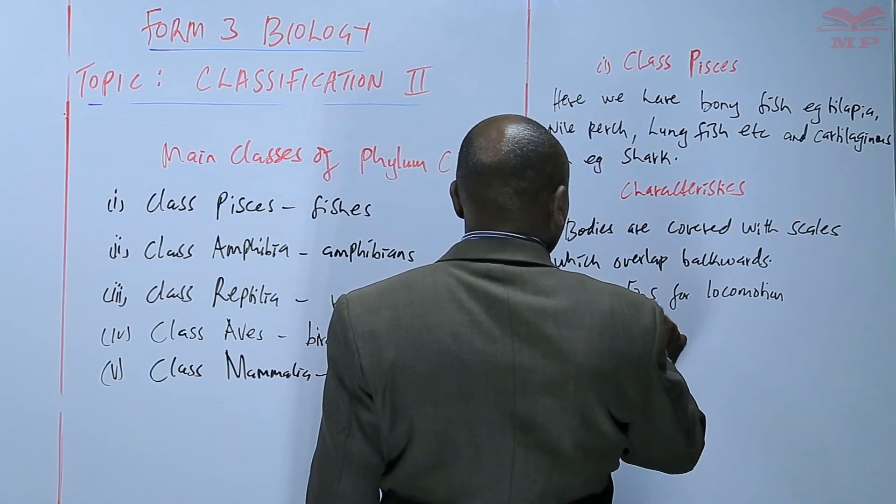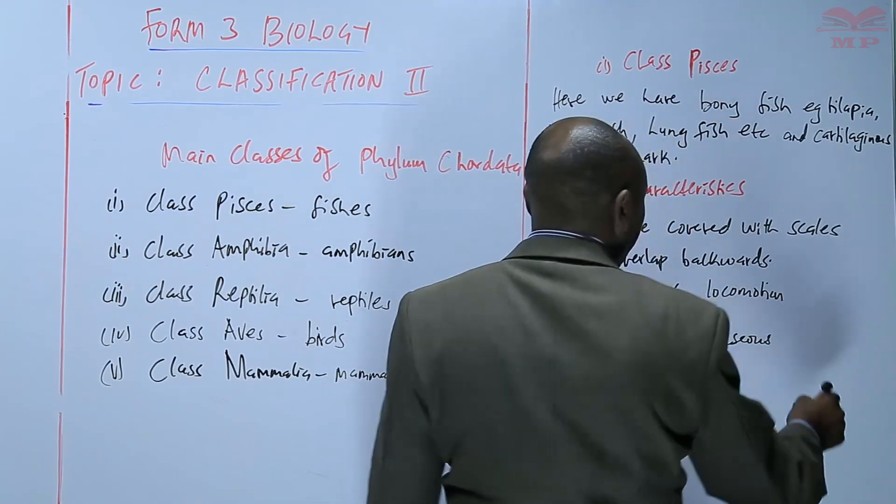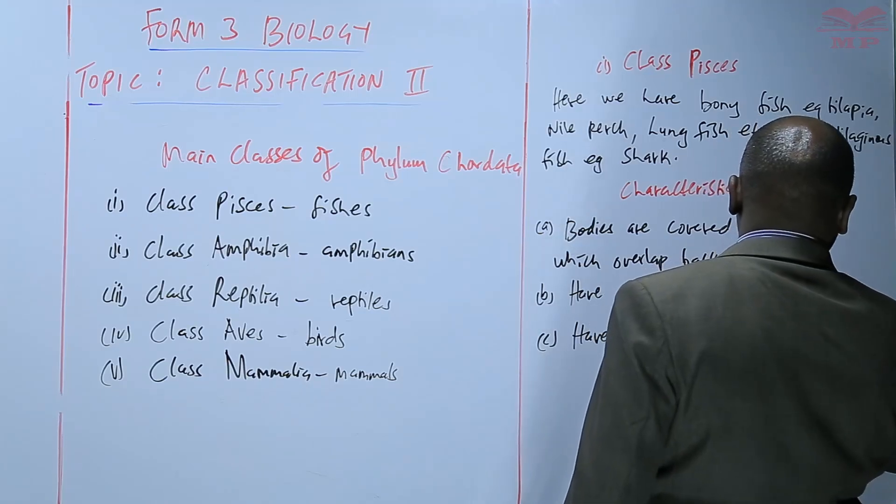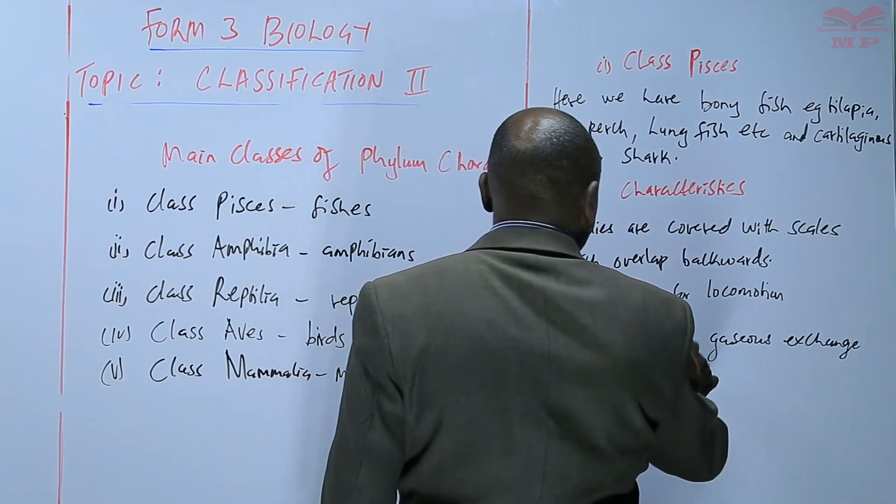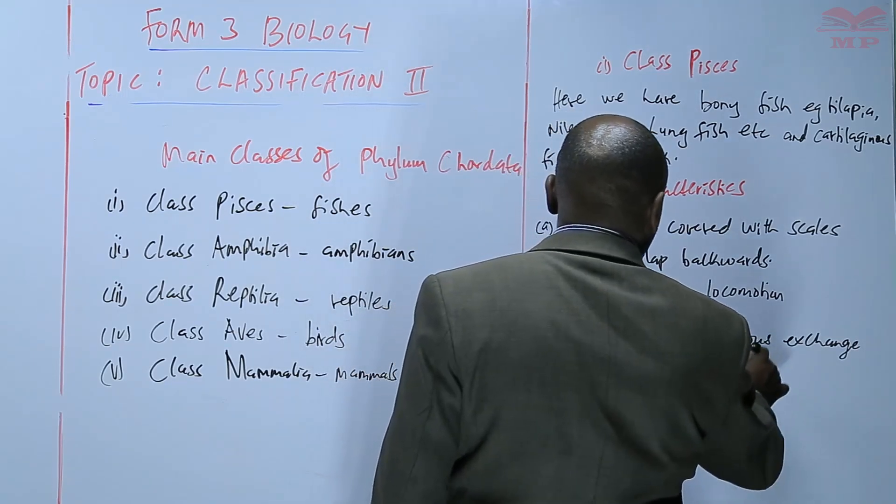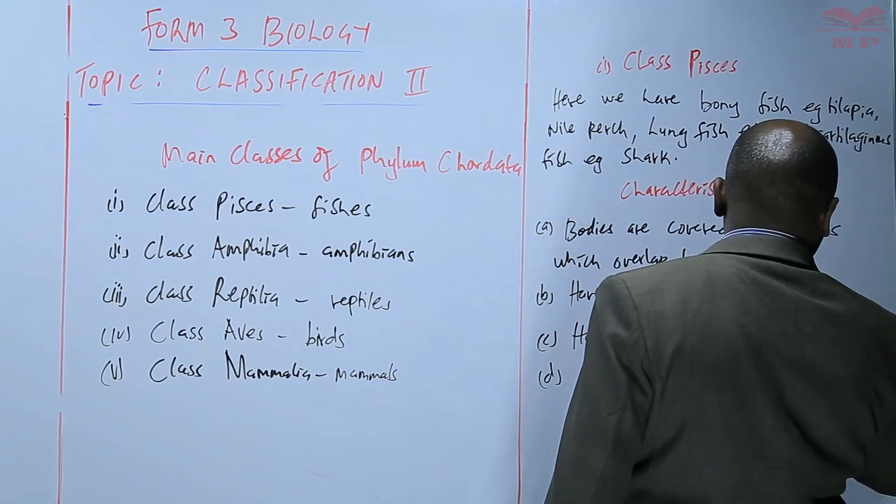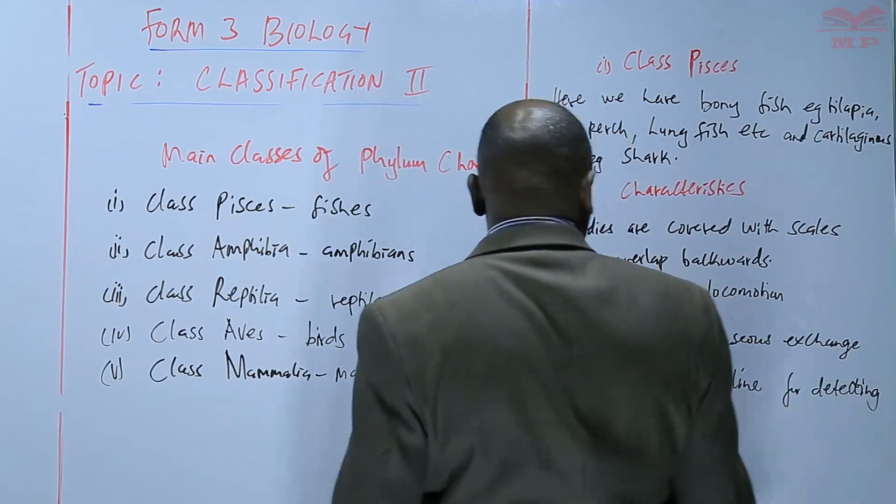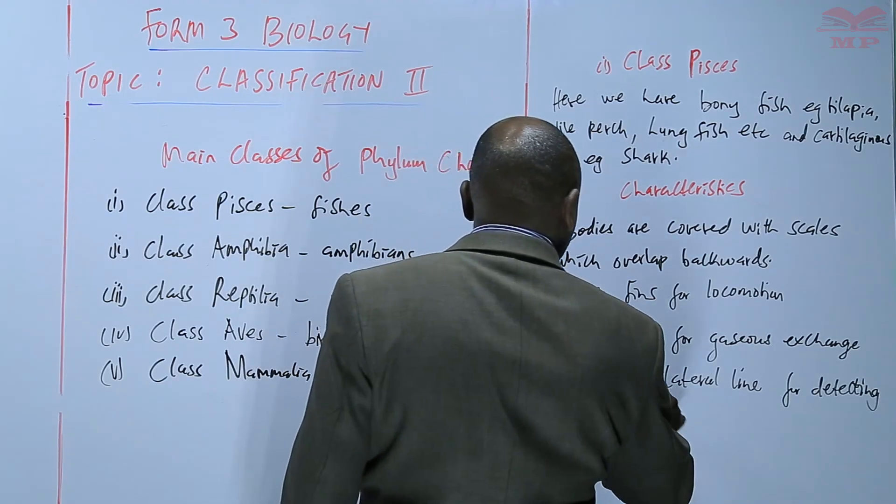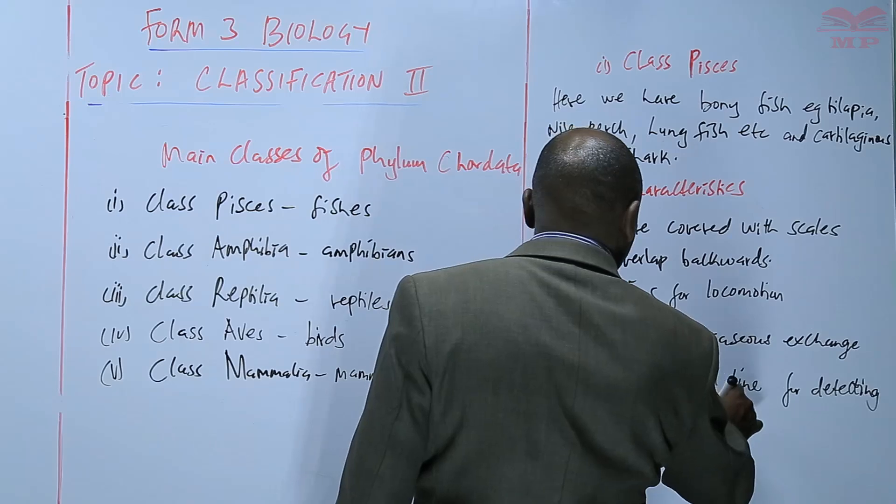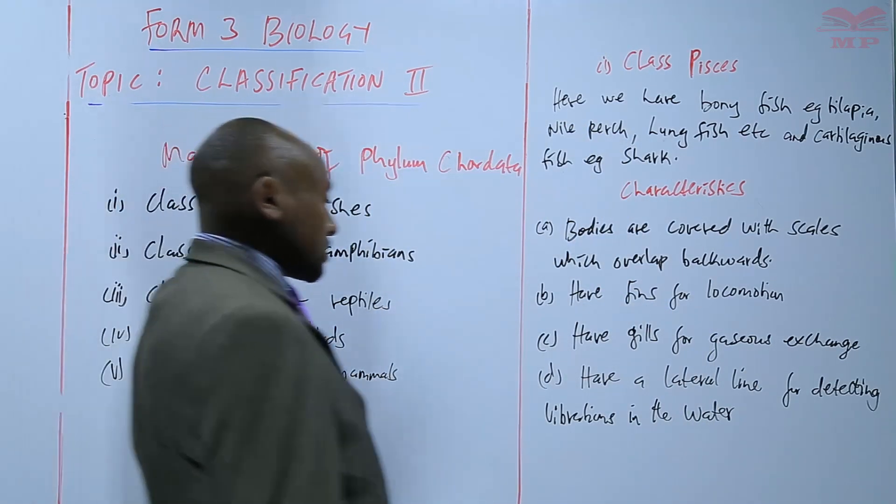We have the different types of fins in the fish for locomotion. They have gills for gaseous exchange. They have a lateral line for detecting vibrations.